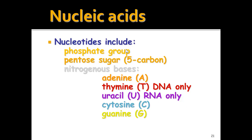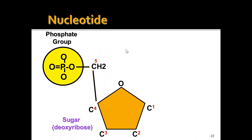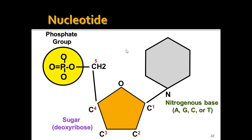Nucleotides include a phosphate group, a pentose sugar (a five-carbon sugar), and a nitrogen base. The nitrogen bases are adenine (A), thymine (T) — only in DNA — uracil (U) — only in RNA — cytosine (C), and guanine (G). In a nucleotide diagram, you have the phosphate group as a circle, the sugar as a pentagon, and the nitrogen base as a hexagon. So each nucleotide has those three parts: a phosphate group, a sugar, and a nitrogen base.